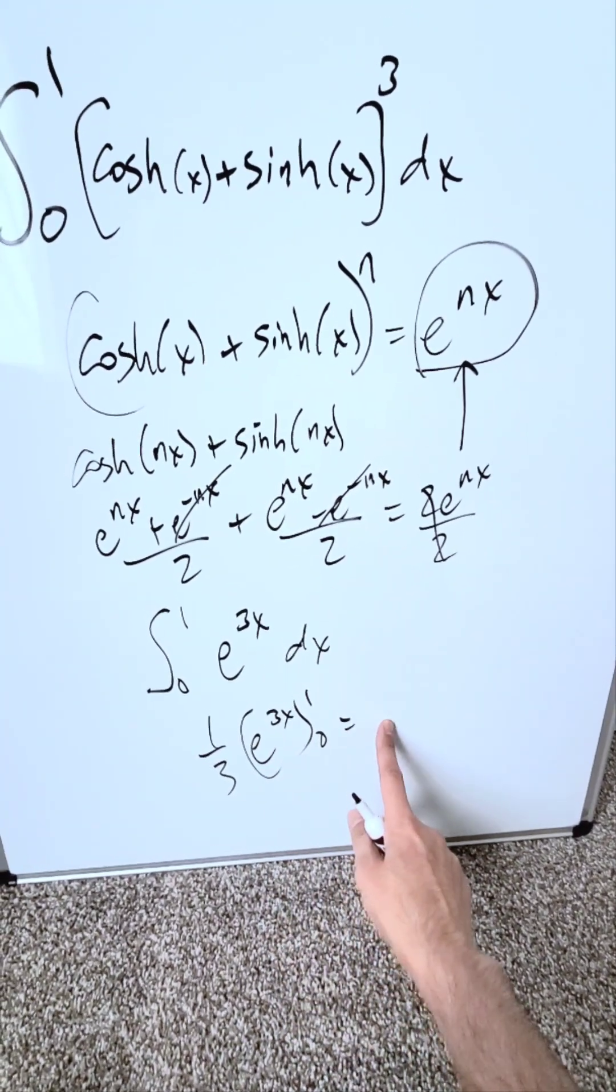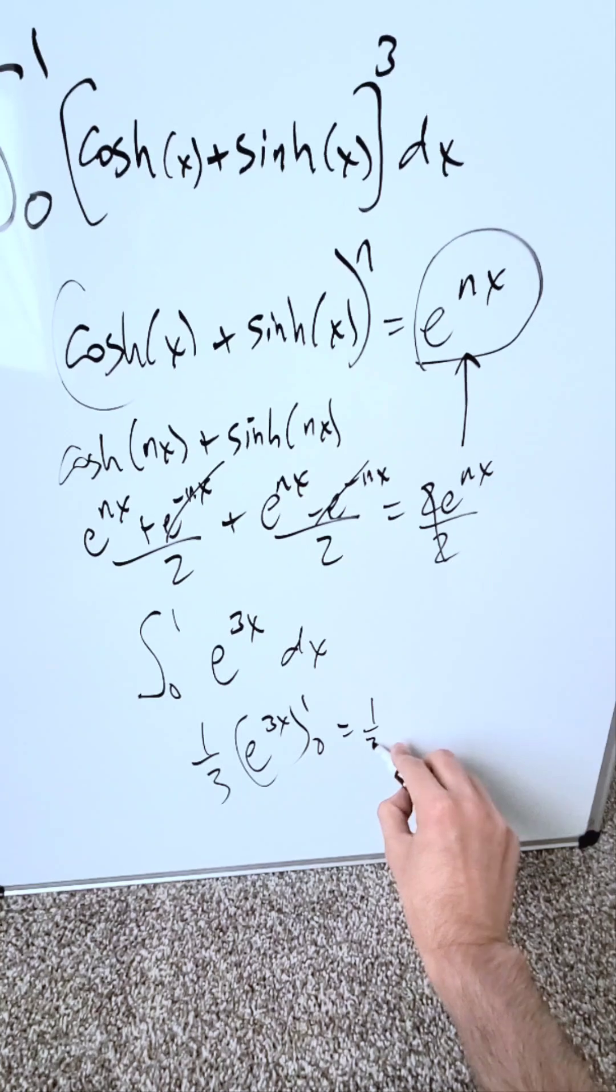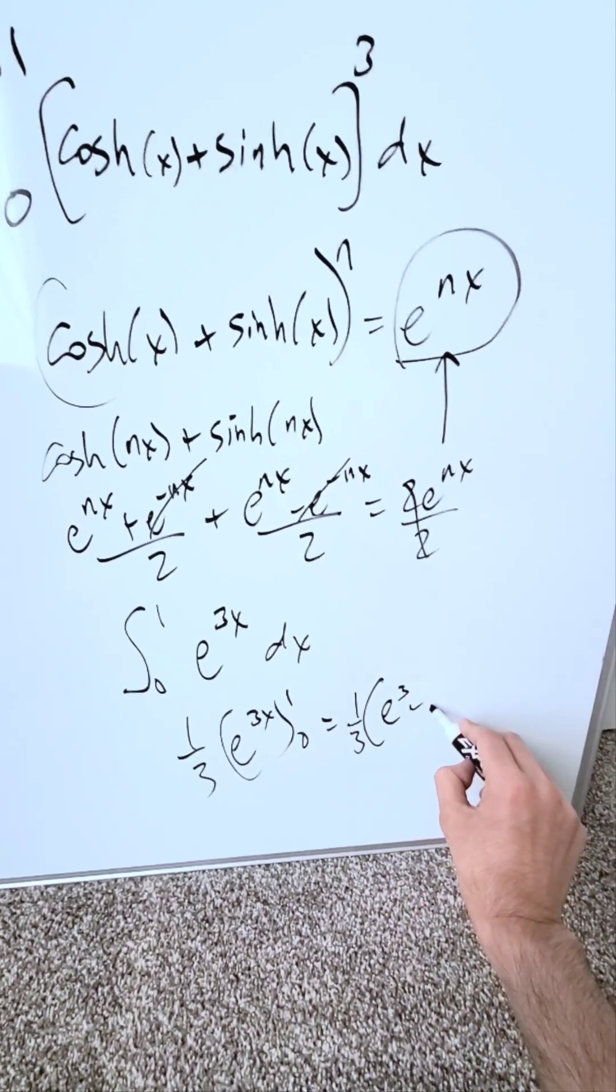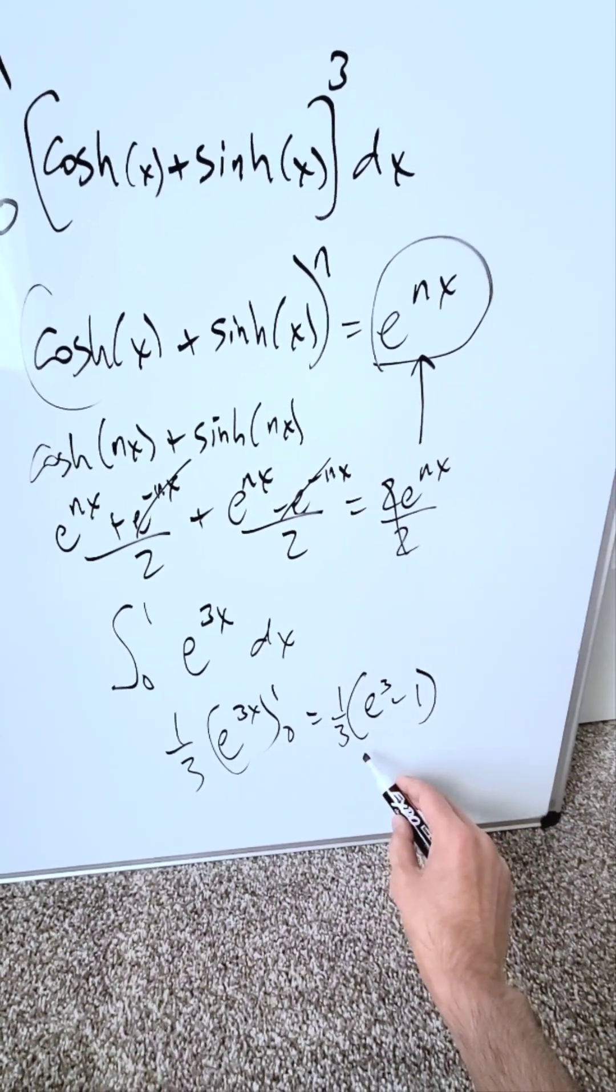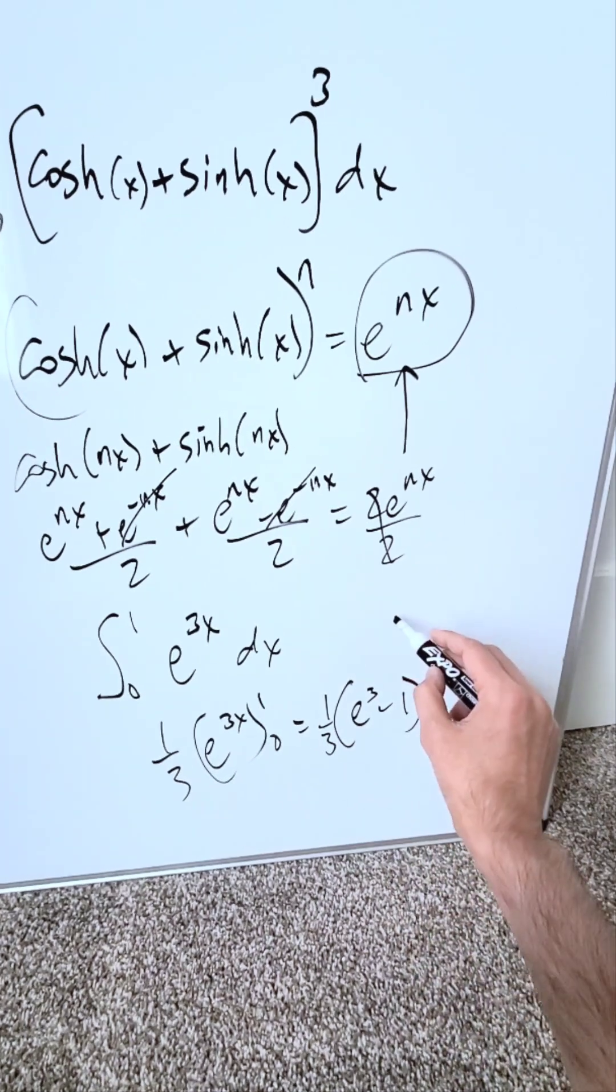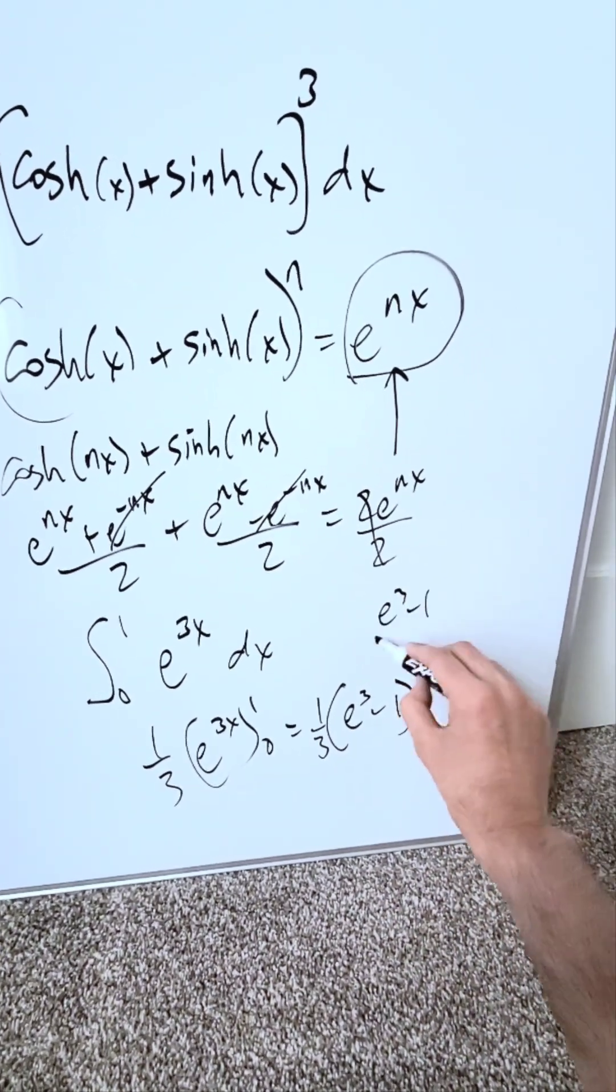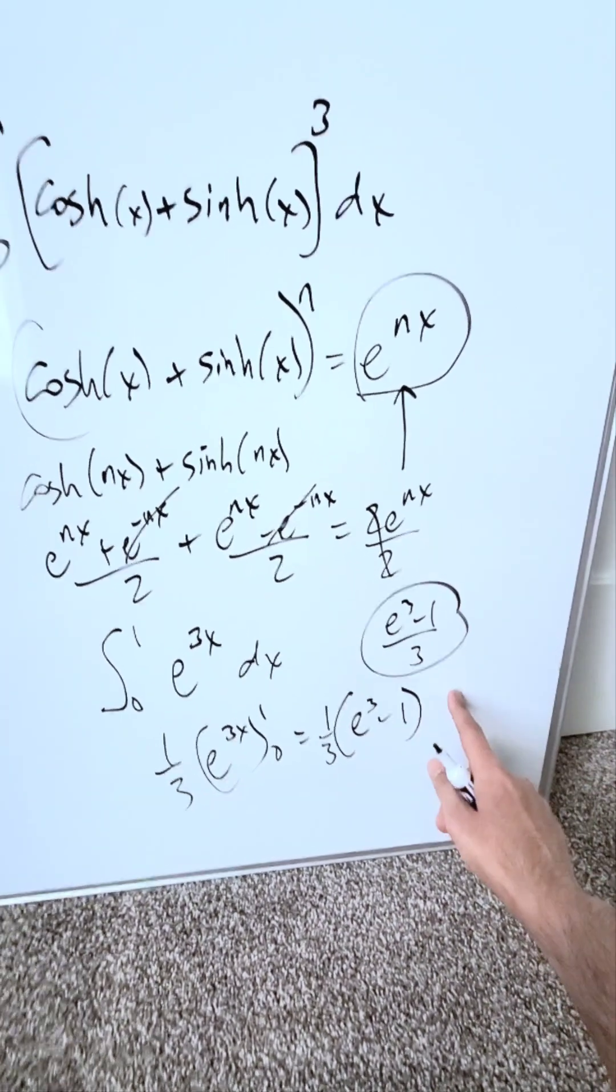And the beauty of this is we'll get an exact value. I'll have 1/3 e to the power of 3 minus e to the power of 0 which is 1. This can serve as your answer, or you can just say I have e cubed minus 1 over 3. This is our end result.